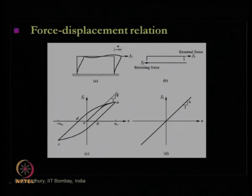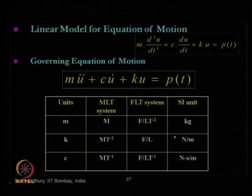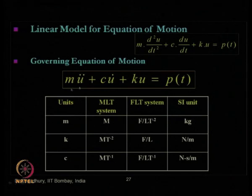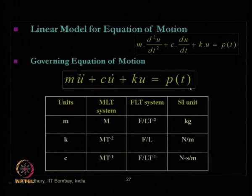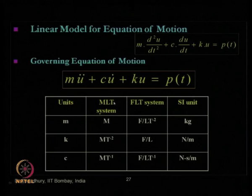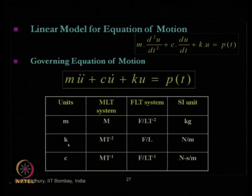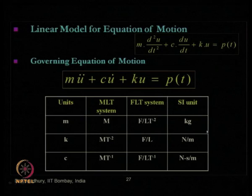The spring force has been idealized by a linear variation with spring constant k passing through the origin. The governing equation of motion for a linear, single-degree-of-freedom simple vibrating system can thus be written as m×ü + C×u̇ + k×u = P(t). The corresponding units in SI are: mass in kg, stiffness k in Newton per meter, and damping constant C in Newton-second per meter.